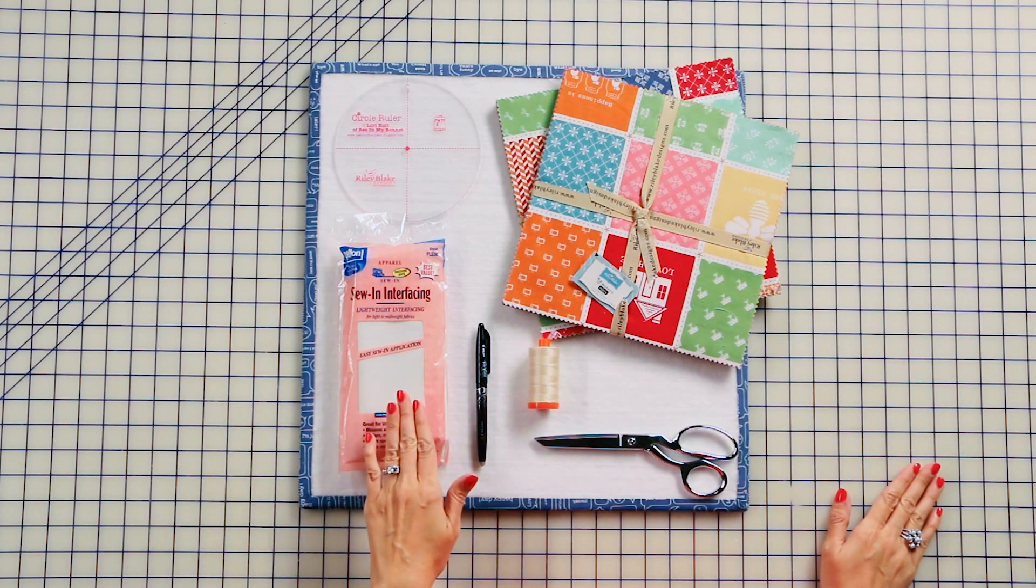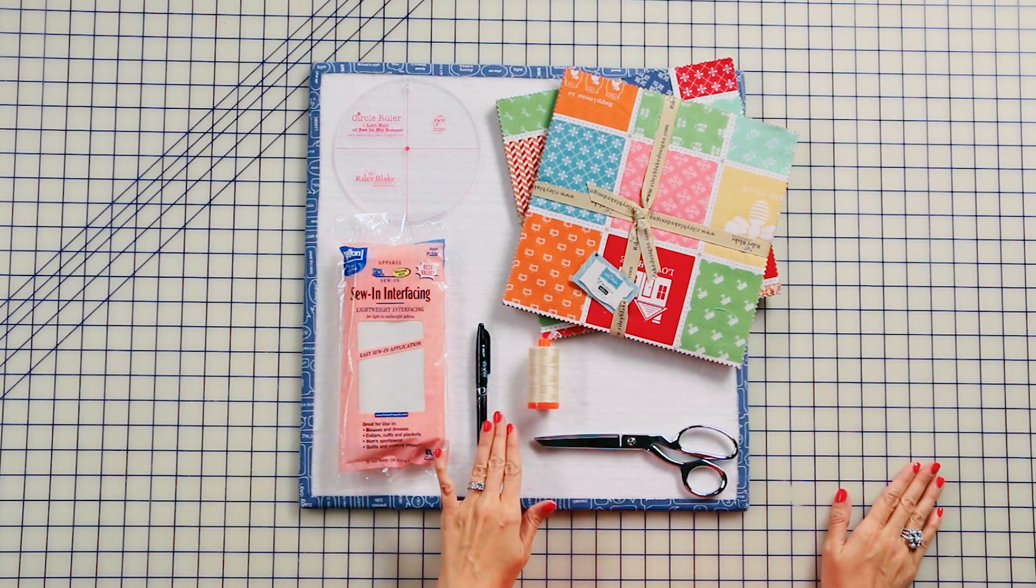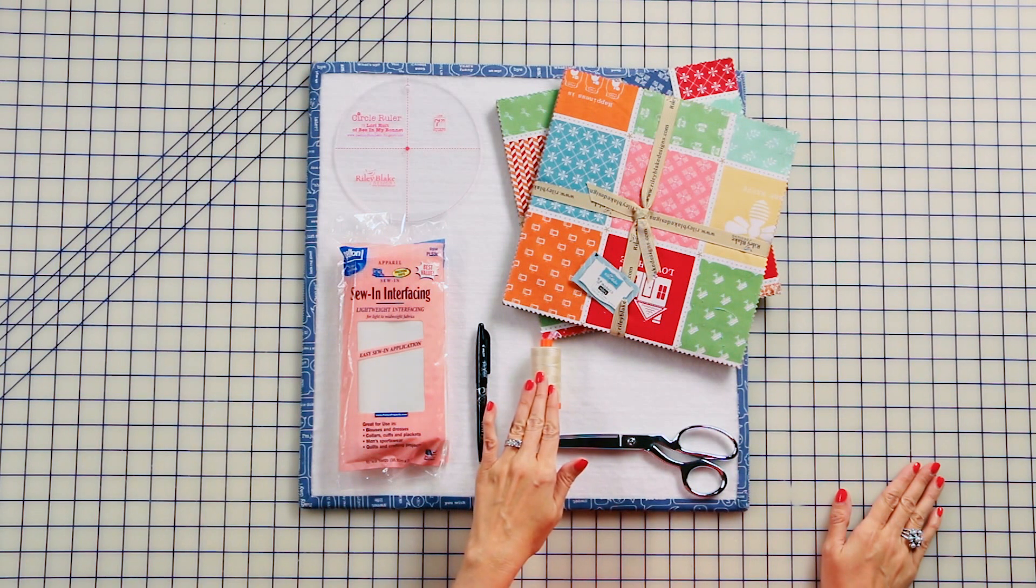You also need Pelon light interfacing, a friction pin, Aurifil 50 weight, and a pair of scissors. Now let's get started.